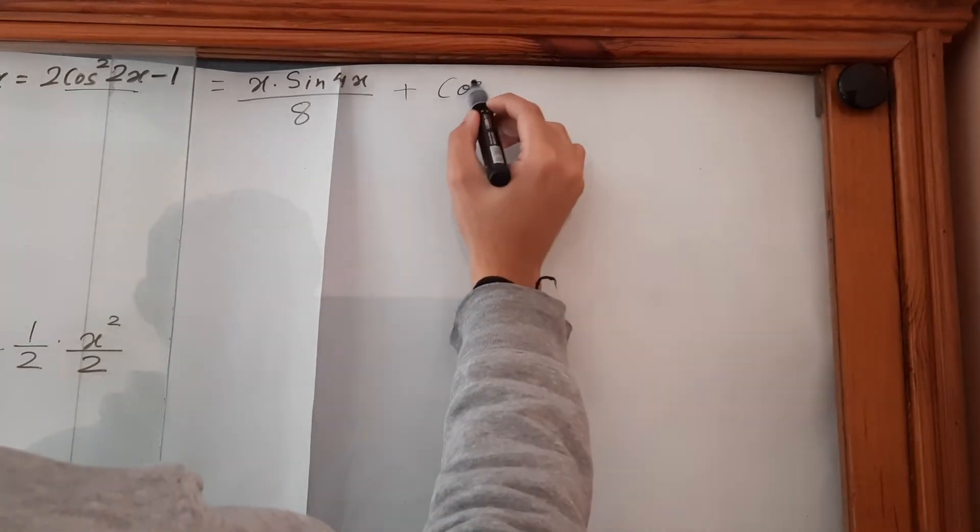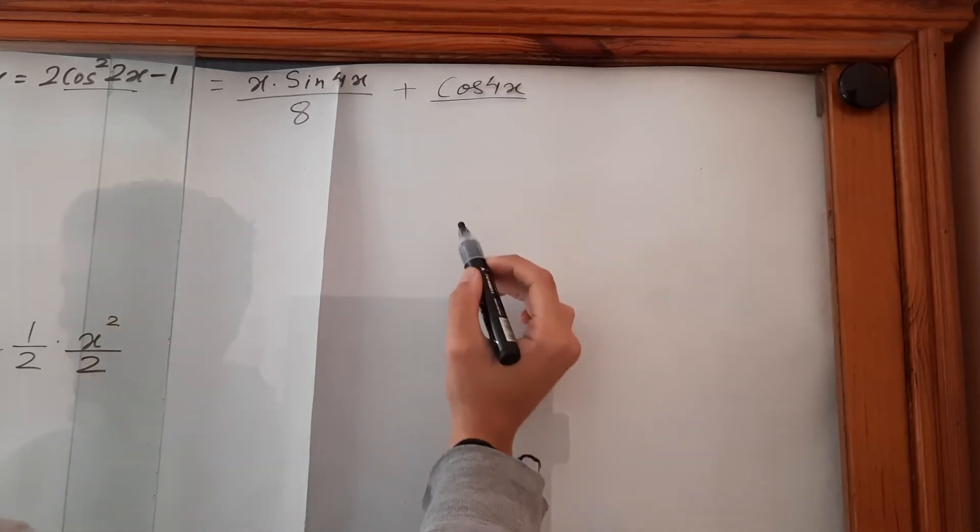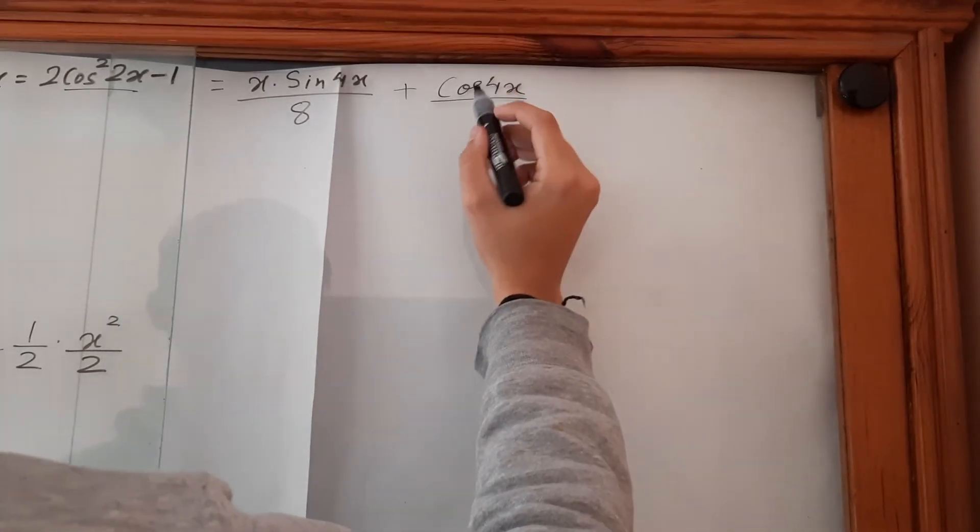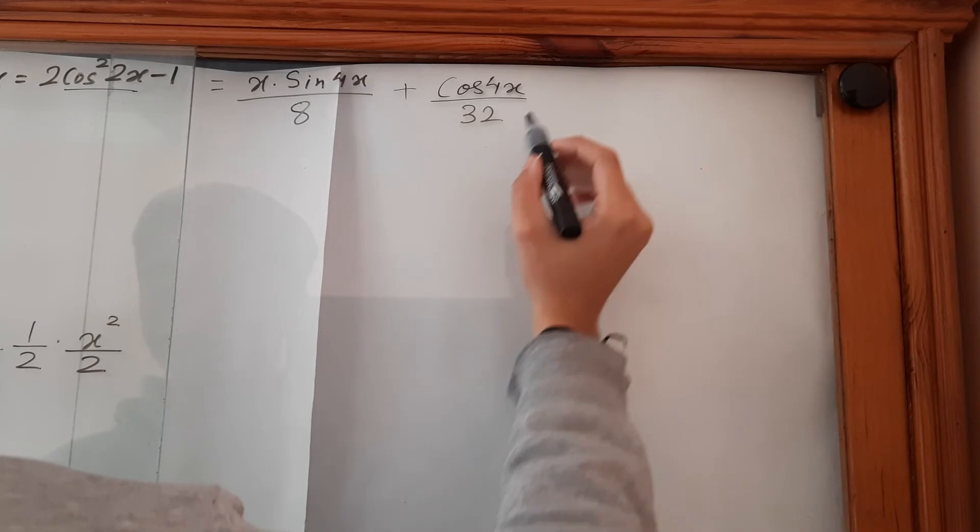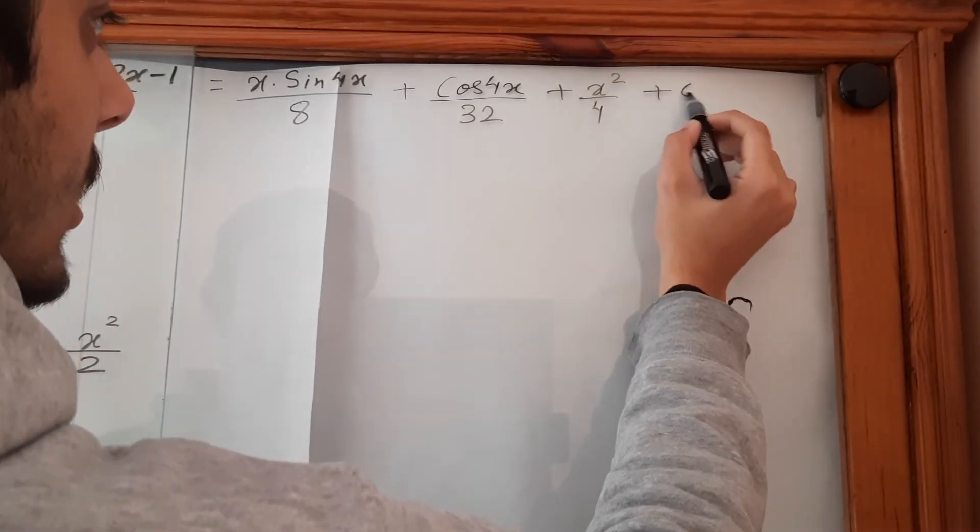Plus cos(4x)/(4×4×2), which is cos(4x)/32, plus x²/4 plus C.